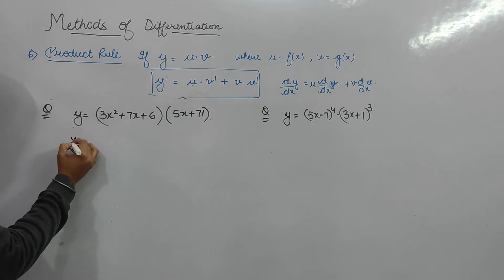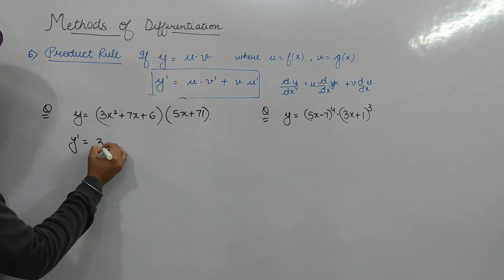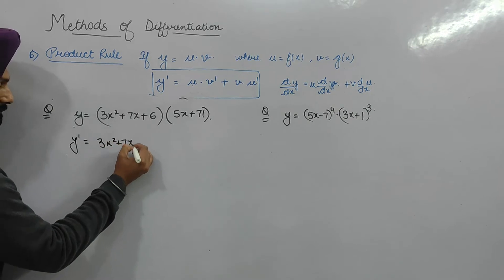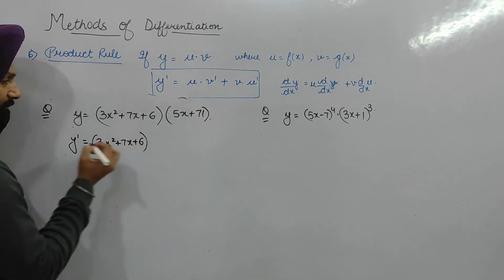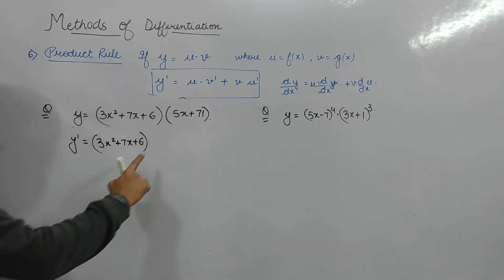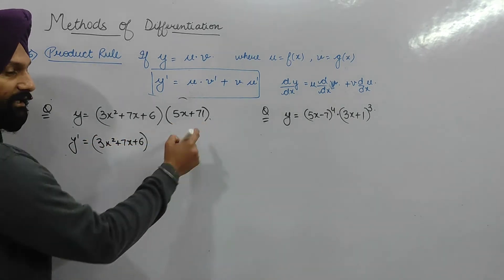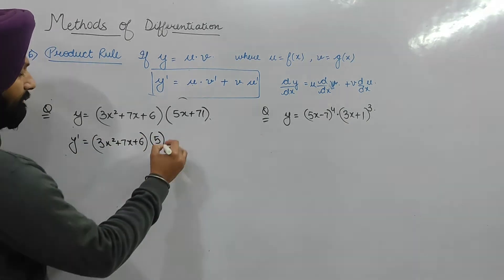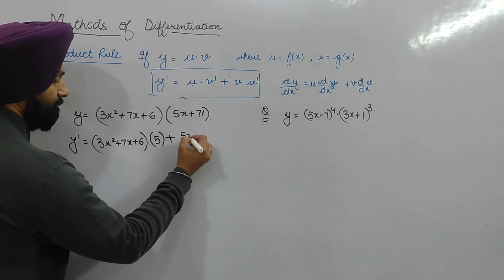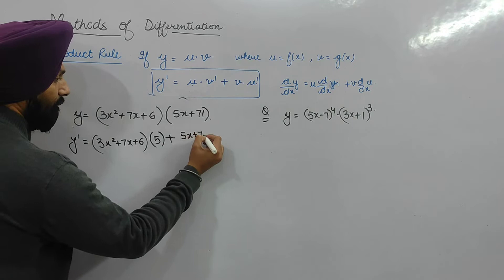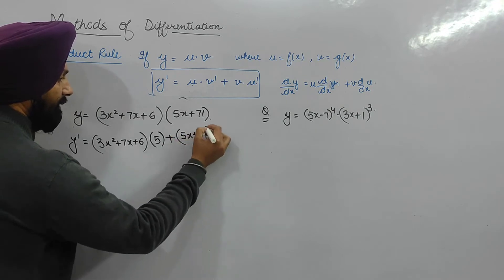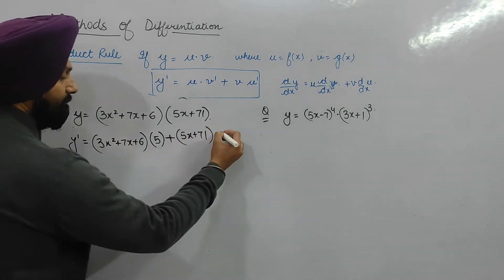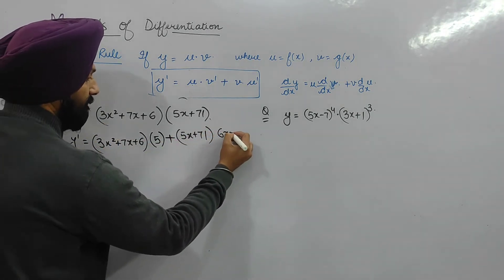Applying the product rule to the next example: y dash equals first function as-is into derivative of the second function (5x + 7), whose derivative is 5, plus the second function into derivative of the first, which gives 6x. So we have (first function) × 5 + (5x + 7) × (6x + 7).